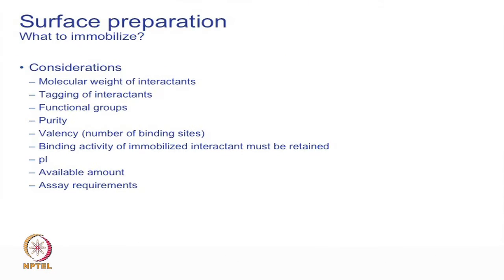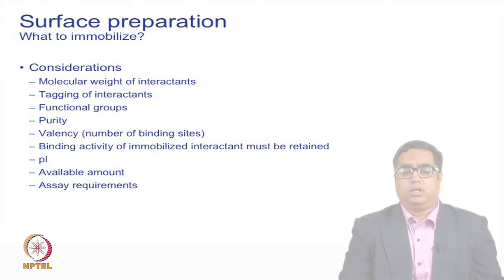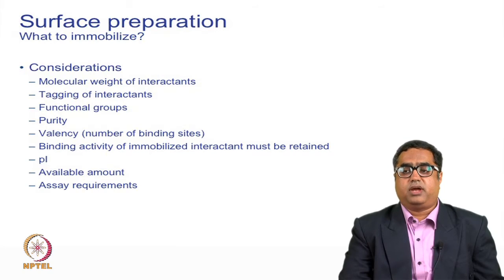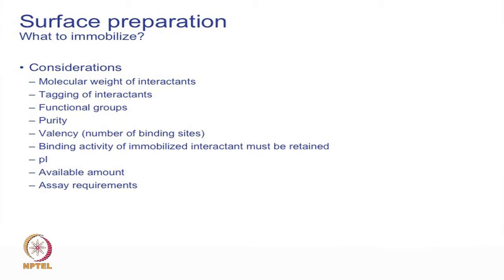When immobilizing, we need a great amount of information about the protein or macromolecule being immobilized. We need to understand the molecular weight of the interactant, the tags present, the functional groups, the PI of the molecule, the purity, the available amount, the required assay conditions, binding activity, and valency.